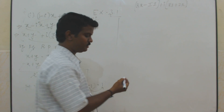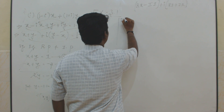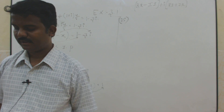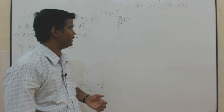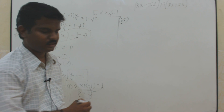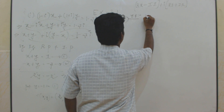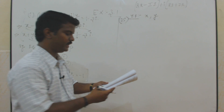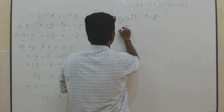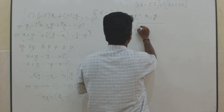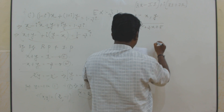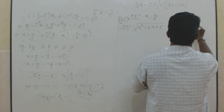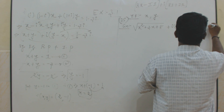Now take down the next one — question number 4, subdivision 3. The aim of the problem is to find x and y. The question given is: the square root of x squared plus 3x plus 8, plus i times (x plus 4), is equal to y times (2 plus i).